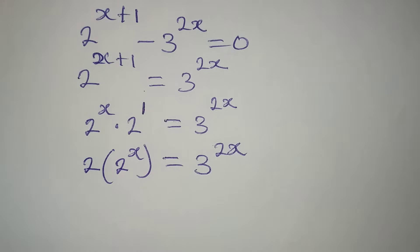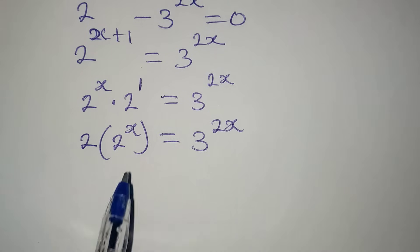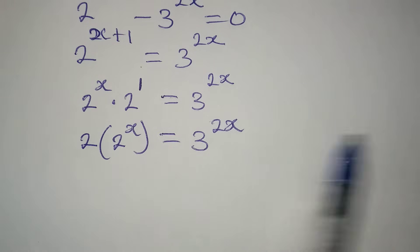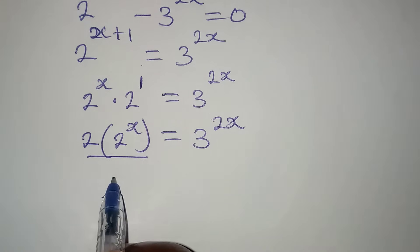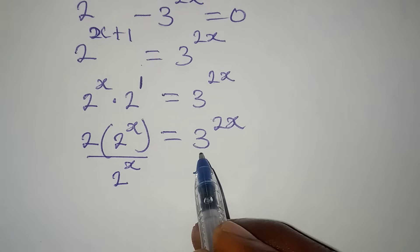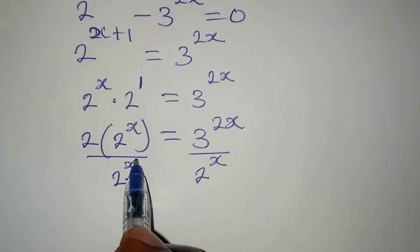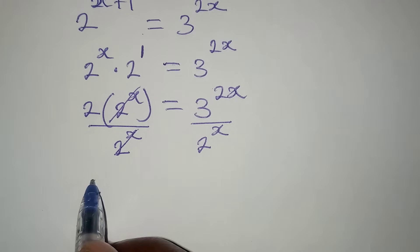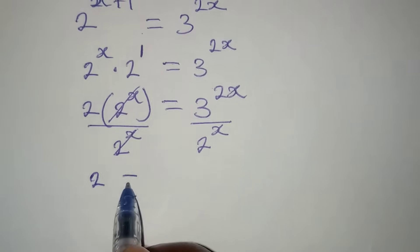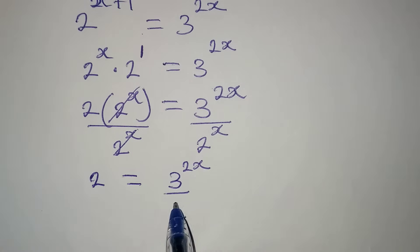Now, I want to take x to the other side so I can combine them and have one x. Because of that, I'm going to divide by 2 to the power of x on both sides. The 2 to the power of x terms cancel each other, so I will have 2 alone, equal to 3 to the power of 2x all over 2 to the power of x.